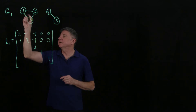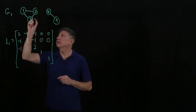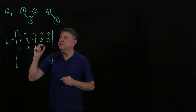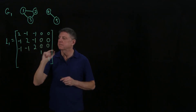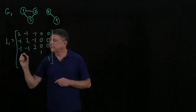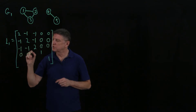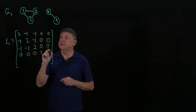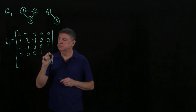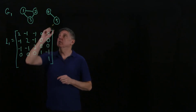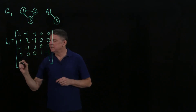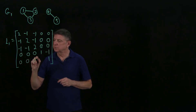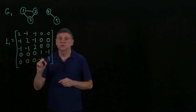Vertex 3 is connected to 1 and to 2, so we place minus 1s in those positions, and it is also connected to 5. Vertex 5 is not connected to 1, 2, or 3, but it is connected to 4.